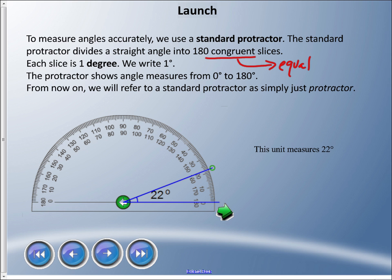The protractor shows angle measurements from zero degrees to 180 degrees. From now on, we will refer to a standard protractor as simply a protractor. There is a different type of protractor that goes 360 degrees, but the protractor we're going to deal with is just the standard protractor. In this picture, this unit measures 22 degrees.